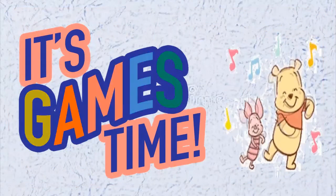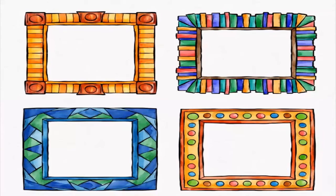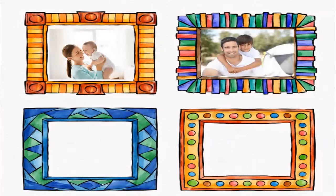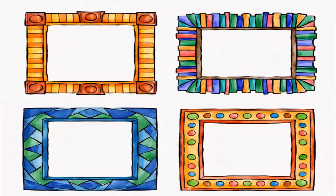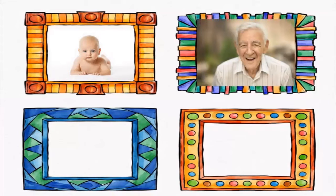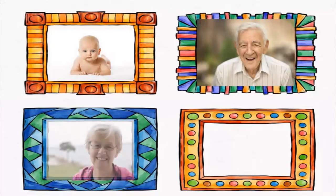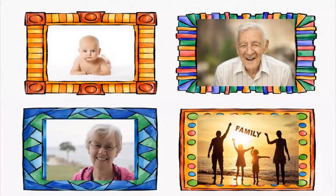Okay, my kids, it's games time! Now tell me what member of the family you can see. Mother, father, brother, sister — good job. Next: the baby, the grandfather, grandmother. And they are a family.